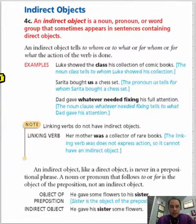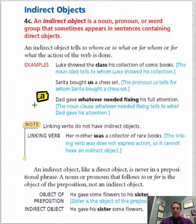Alright, let's look at the examples they give us. Basically the first one says Luke showed the class his collection of comic books and they said that class is the example of an indirect object. So let's go through this like we normally would. First let's find the subject of this and in this case the subject is going to be Luke. I'm gonna go over here and switch colors really quickly and basically we can find out pretty quickly that Luke is a subject and the fact that he showed is going to be the verb.